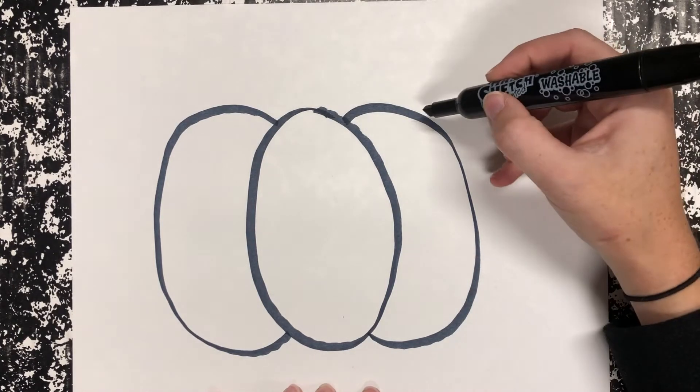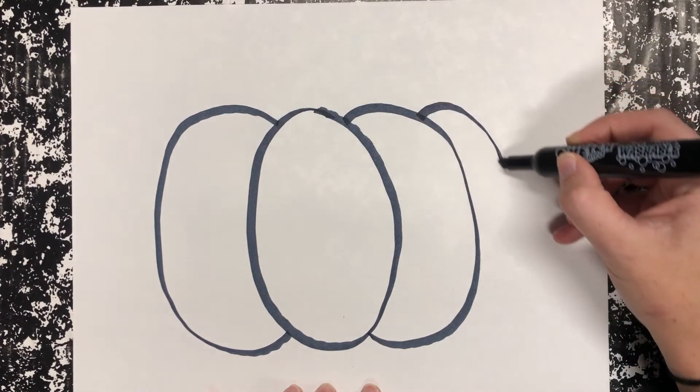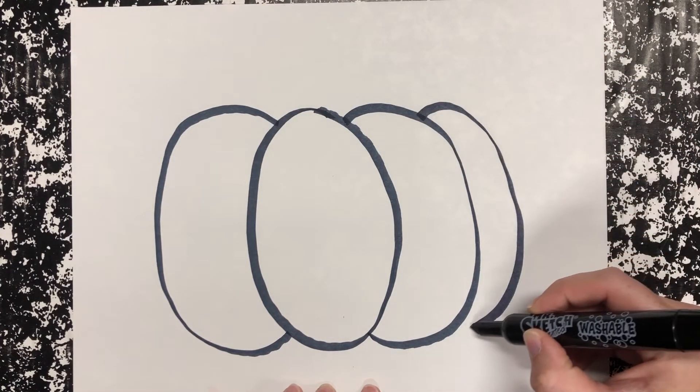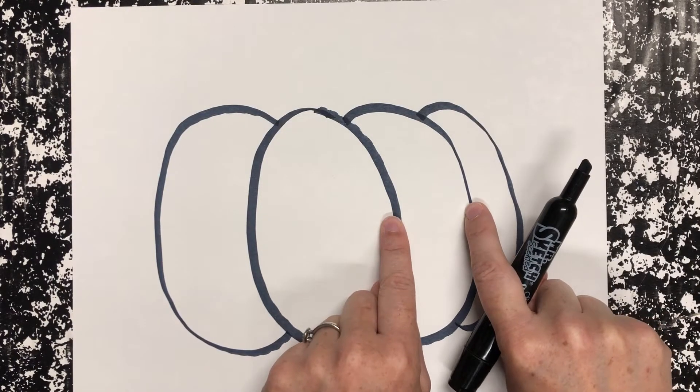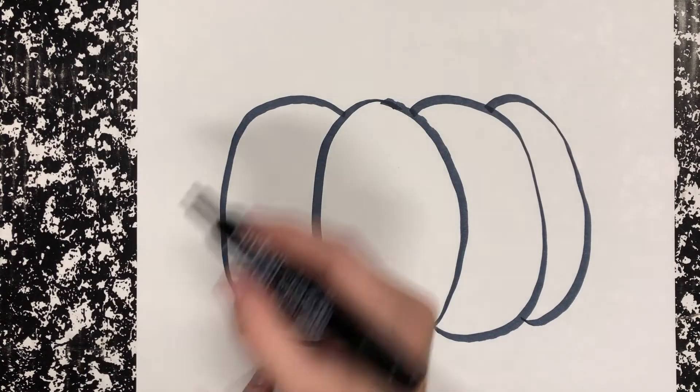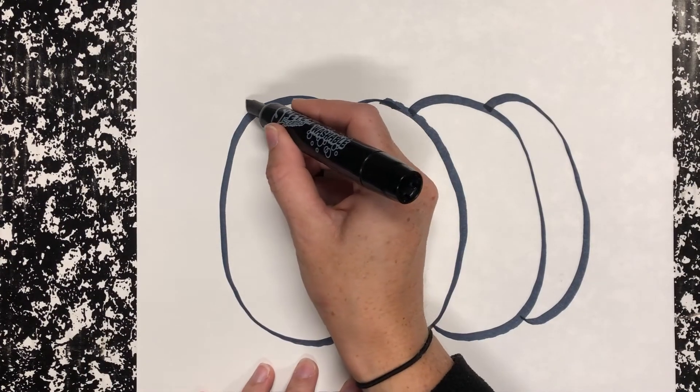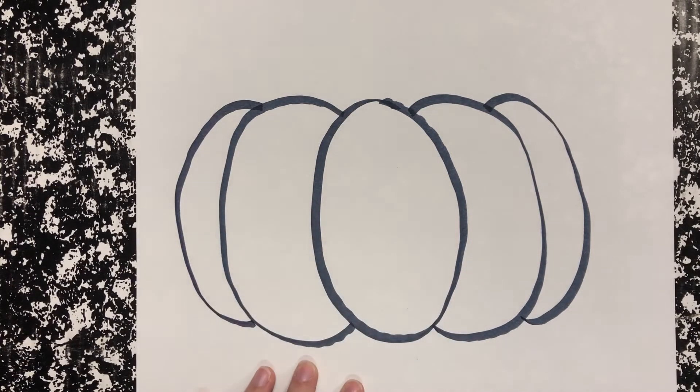So here's the next step if you want to make it a little bit bigger. It's the same thing, just a little smaller this time. So see how this one is a little bit bigger. This one is a little bit smaller. Now I'm going to go to the other side. Do the same thing.